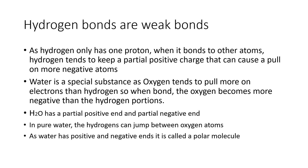In water, oxygen is bound to two hydrogens — the oxygen is at the top and the hydrogens come off the sides. Since electrons bind more closely to oxygen, oxygen carries a slight negative charge, while the hydrogens carry a partial positive charge. As you have a partial positive charge on one side and partial negative on the other, water is called a polar molecule.